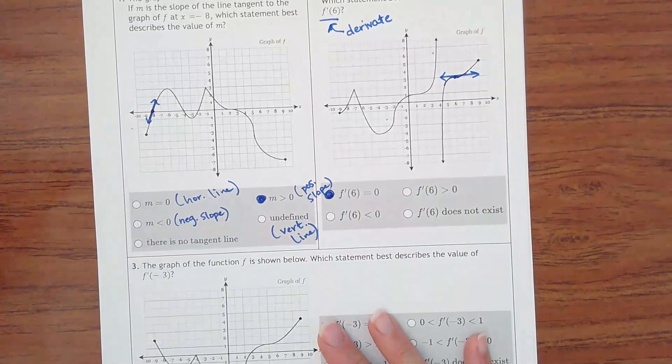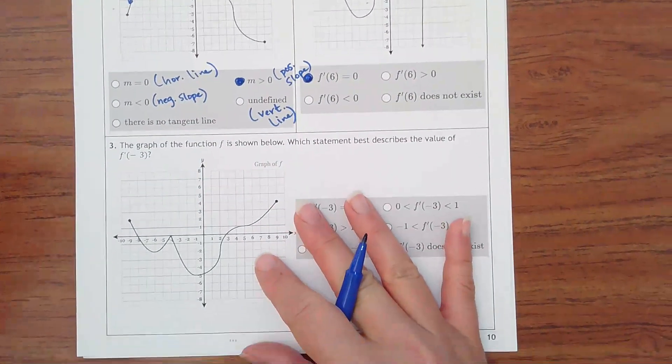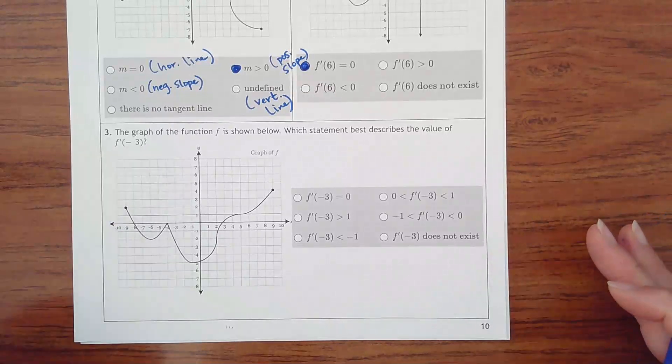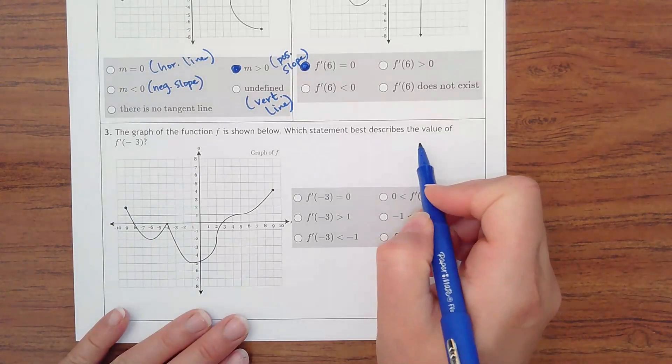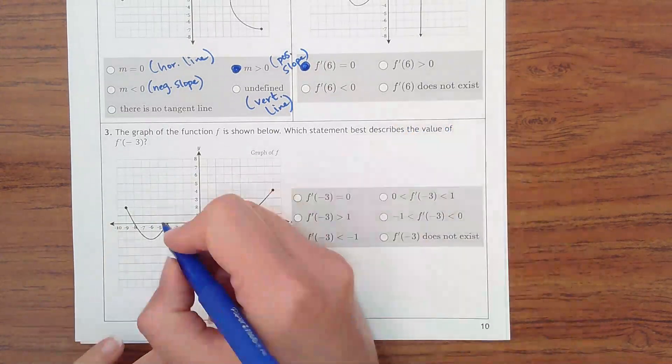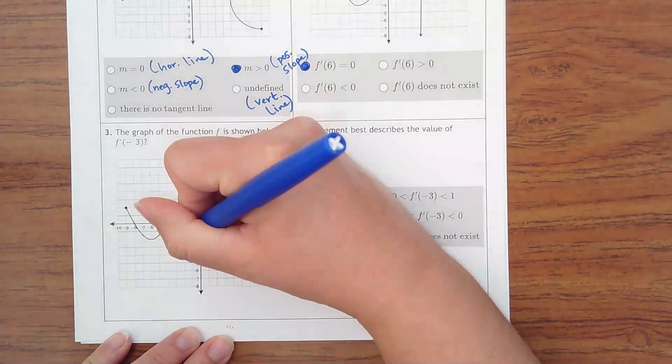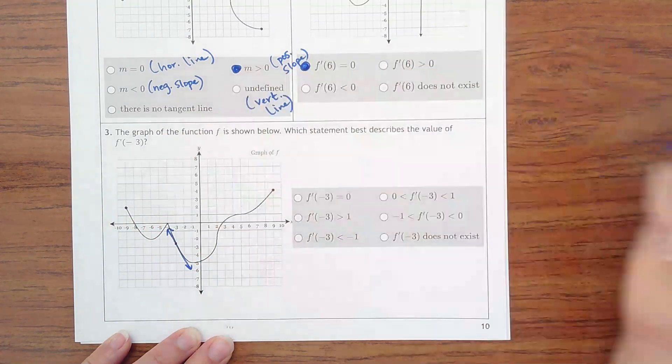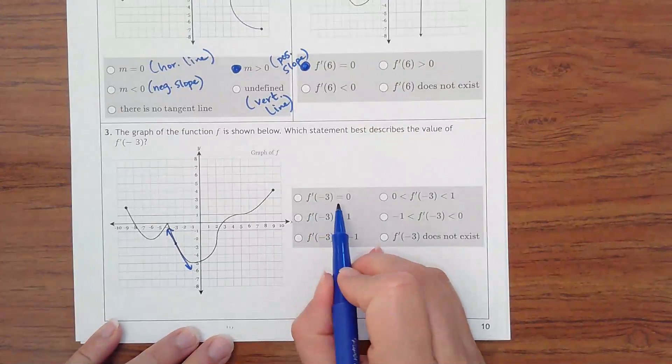And then the last one's a little harder because we have some more inequalities to choose from. It says, which describes the value best of f prime of negative 3? So the slope at negative 3. Find that. We're looking at a line that looks like this. So is the slope 0? No.